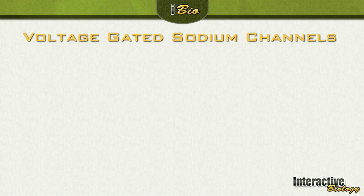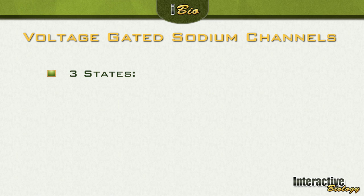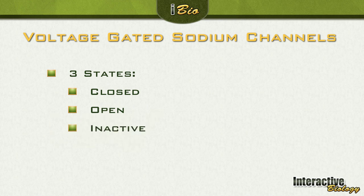We've been looking at the action potential, and we've said that when a stimulus comes and it makes the membrane potential go above the threshold, we get an action potential. The reason why we get this action potential is because voltage-gated sodium channels open. Now, voltage-gated sodium channels are very unique in that they have three states: they can either be closed, open, or inactive.